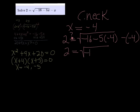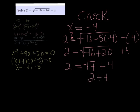So this is the square root of negative 16 plus 20, and this is plus 4. The square root of negative 16 plus 20 is going to give us the square root of 4, and then we have the plus 4. Now that's 2 plus 4, which is 6. 6 does not equal 2, so negative 4 does not work.